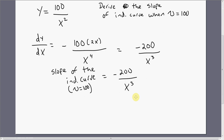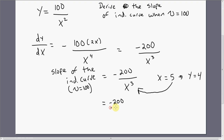We can evaluate the slope of the consumer's indifference curve at a certain point — let's say where x equals 5, and when x equals 5, y equals 4, which we found as one of the coordinates on the indifference curve when utility equals 100. Evaluating the slope at x equals 5 gives us an answer of minus 1.6. That's the slope of the consumer's indifference curve when utility equals 100 and we're at the point where x equals 5 and y equals 4.